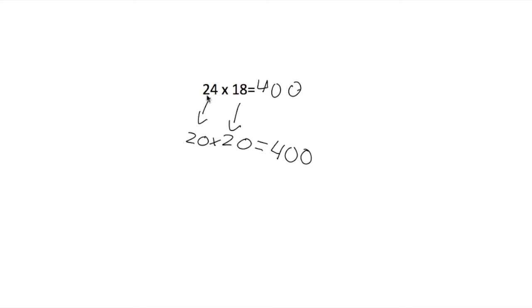But anything before 5 we round backwards. That's why 24 would go to 20. Now 18, well 8 is bigger than 5, we round forwards and the next 10 that comes after 18 is 20.